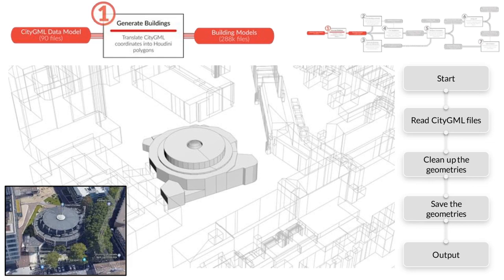In step 1, the model encoded in the CityGML files is imported into Houdini and saved in the native BGO format. Polygons that are below 10 square meters are considered too small and are tagged. Other invalid geometries are also fixed while importing.